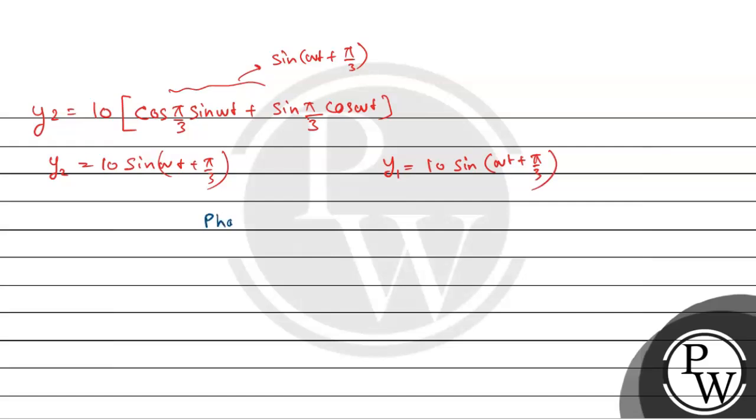The phase difference between y1 and y2 is zero, because this is omega t plus pi by 3 and this is also omega t plus pi by 3.